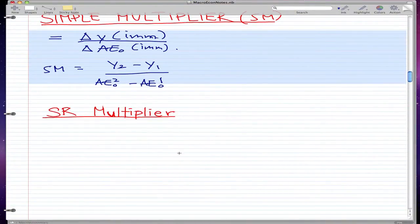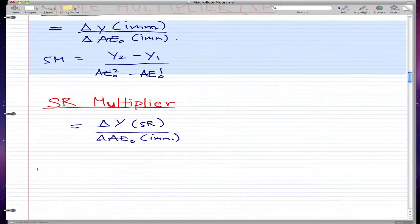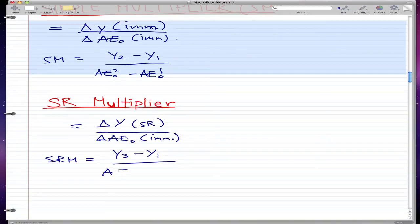And the formula for short run multiplier is change in y SR, which is short run, over the change in AE not immediate. And I'm just going to be honest and say that I don't remember why it is over immediate. So if any of you know why, then could you just please put it in the comment and enlighten the rest of us.